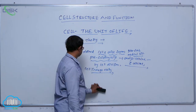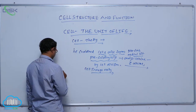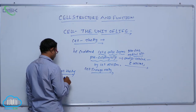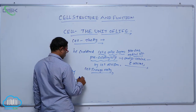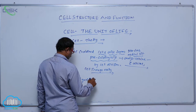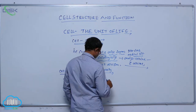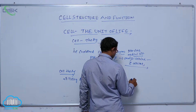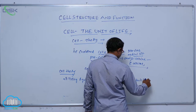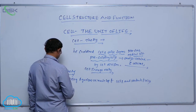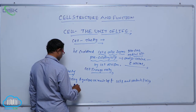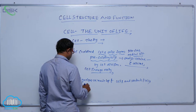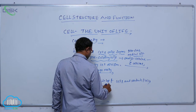According to the final cell theory: all living organisms are made up of cells and products of cells. Second, new cells or daughter cells arise from pre-existing cells.